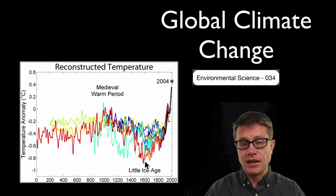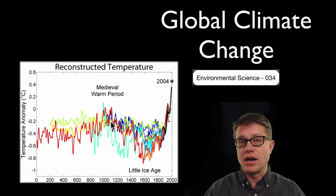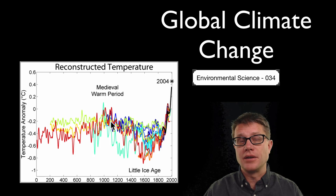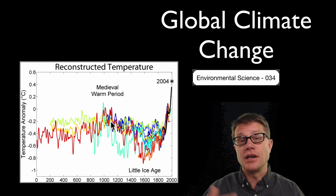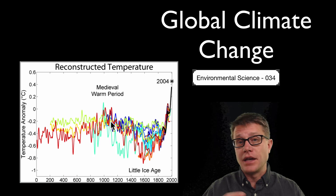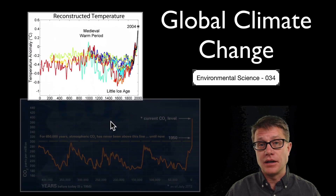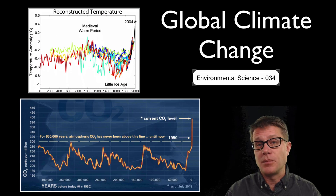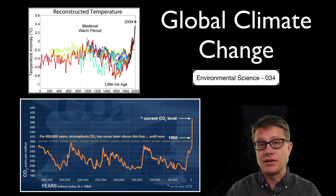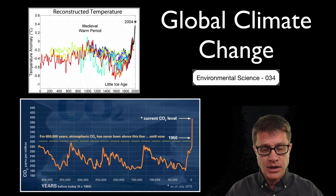We are going to have little ice ages and warming periods. The problem right now is the climate is changing too quickly. The globe is heating up, and that global warming is caused by us. We are increasing the amount of greenhouse gases in the atmosphere.